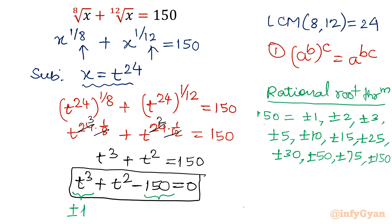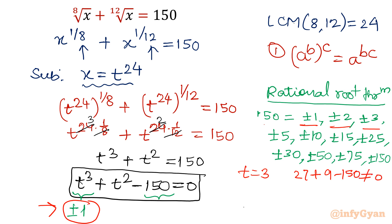If I put t equal to 5, then 5 cubed is 125, 5 squared is 25, and 125 plus 25 minus 150 gives us 0. So one factor is t equal to 5. Let us apply synthetic division to find the remaining two factors.